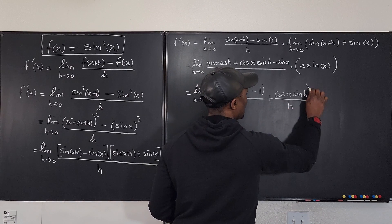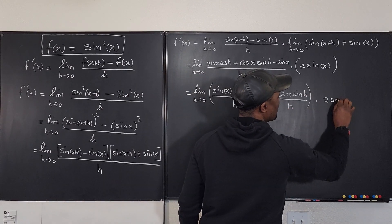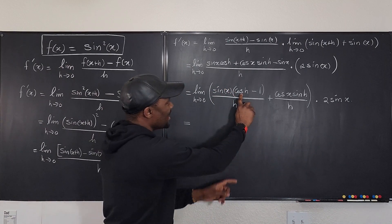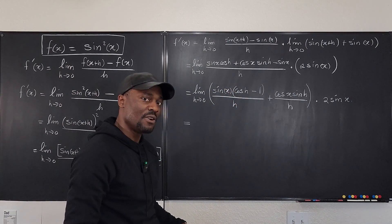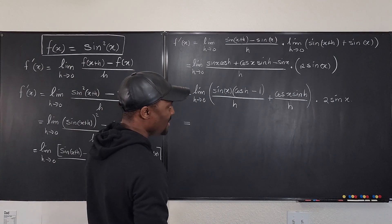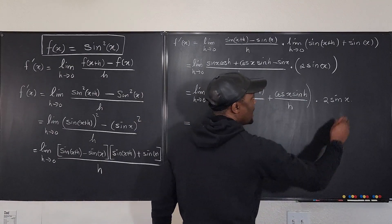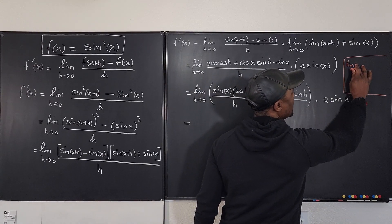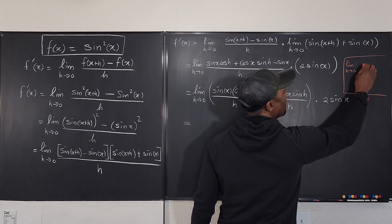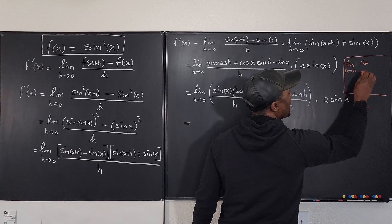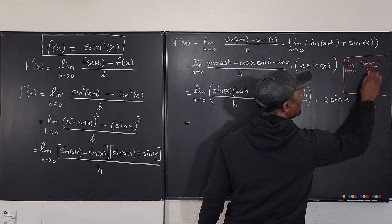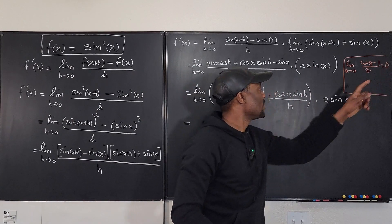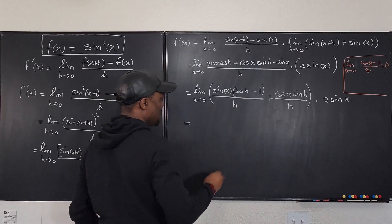We need to clean this up. The limit of (cosine h minus 1) over h will go to zero. Recall that the limit as theta goes to zero of (cosine theta minus 1) over theta equals zero. That will always go to zero, and that's the situation we have here — so this term goes to zero.